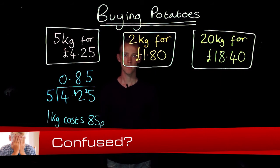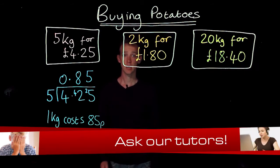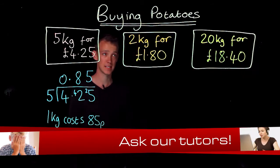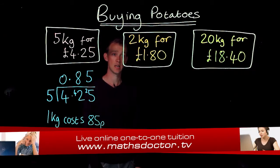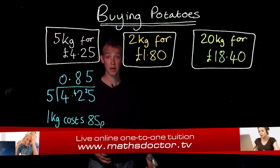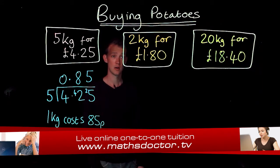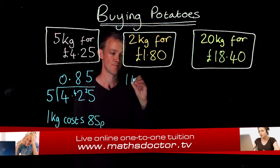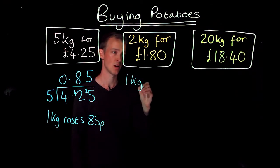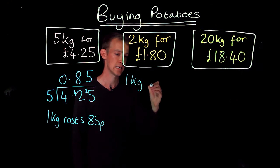Let's have a go at the next one: two kilograms for £1.80. If I'm trying to find out one kilogram, I simply halve my cost. So one kilogram is going to be half of £1.80, which is 90p.